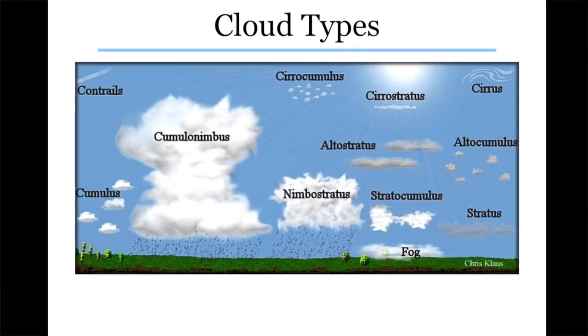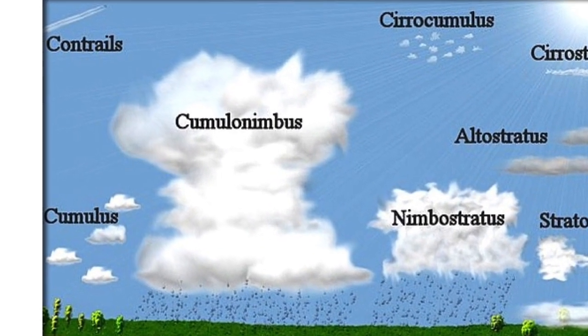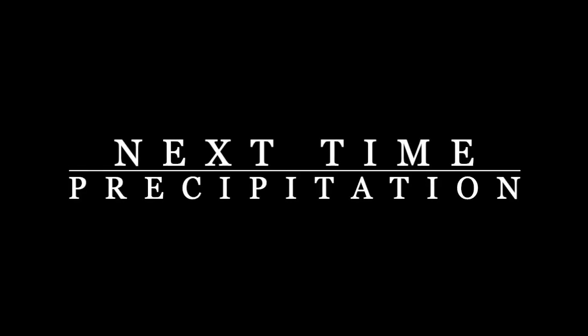The last one I want to talk about is the biggest — this is the big daddy of all of them: cumulonimbus clouds. The cumulonimbus cloud can go 40, 50, 60,000 feet high in the sky. This is where you get your thunder, your lightning, your hail, your tornadoes — this is where the real storminess happens. Coming up in our next lesson, we're going to talk more about the precipitation that comes out of all of these clouds.